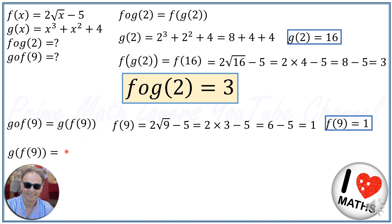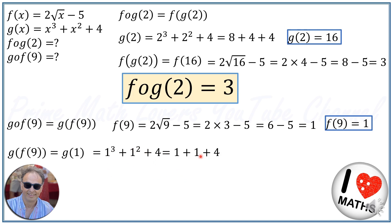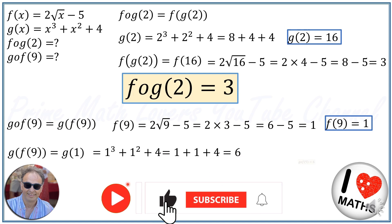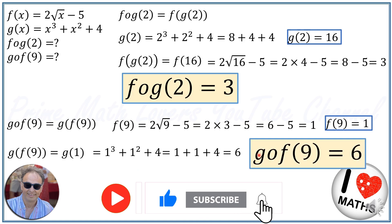For g∘f(9) we calculate g(1). In g(x), we replace x with 1. So it will be 1³ + 1² + 4. 1 cubed is 1, 1 squared is 1, plus 4 gives us 6. So g∘f(9) = 6.